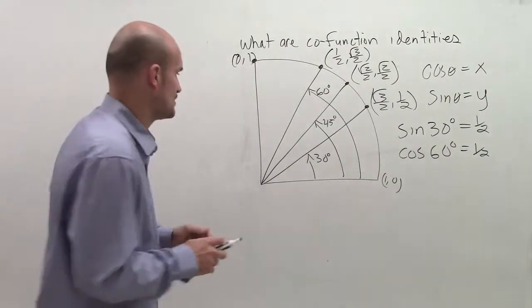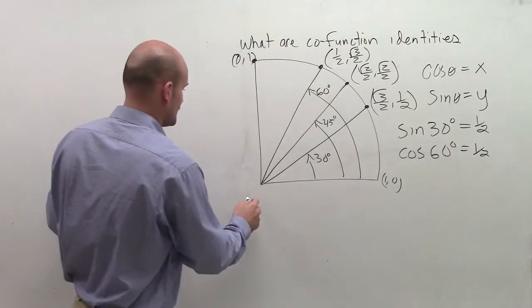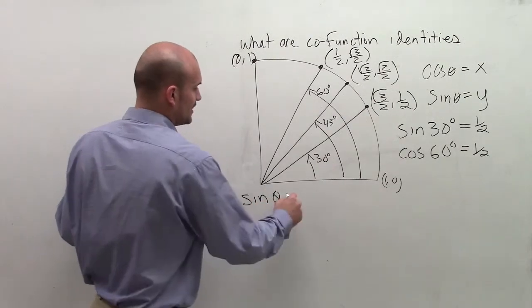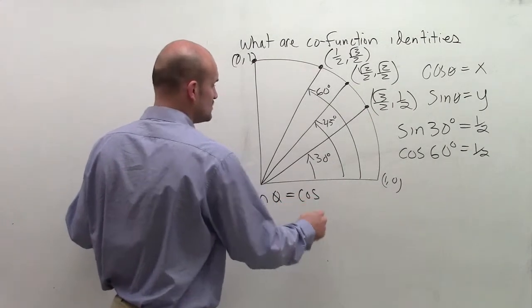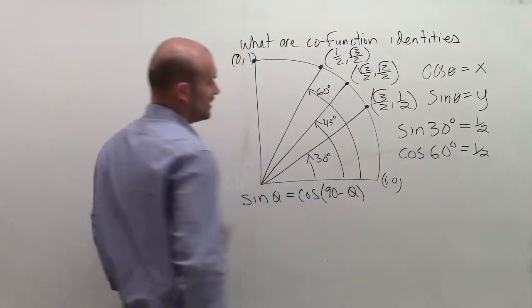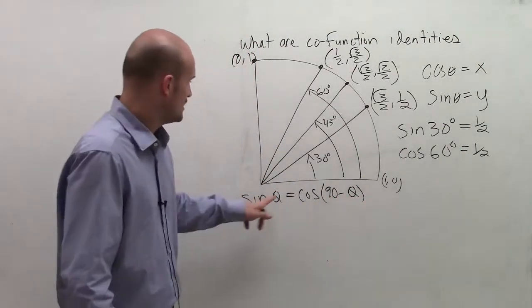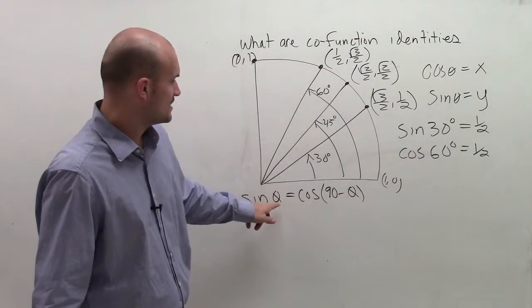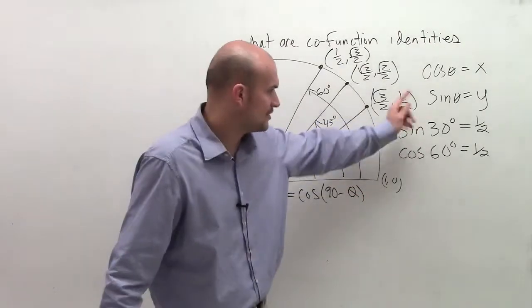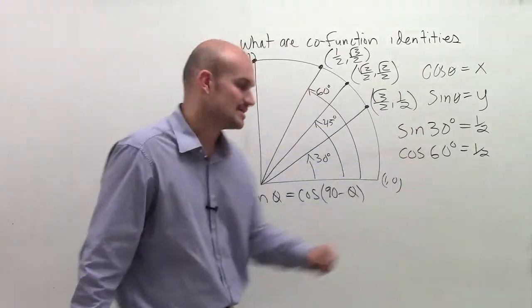And here's how co-function identities are written. What we're saying is the sine of any angle is equal to the cosine of 90 minus that angle. And let's take a look, see if that will make sense. So the sine of 30 degrees is equal to the cosine of 90 minus 30, which would be 60. Is sine of 30 equal to cosine of 60? Yes.